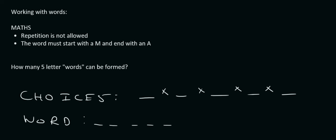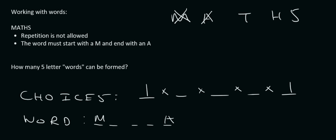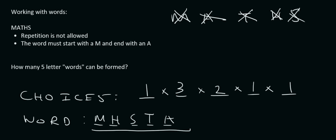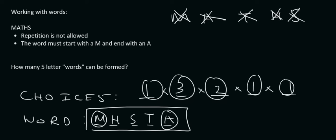Now a similar question, but repetition is not allowed. The word must still start with M and end with A. So M is fixed at the start — one way to choose that — and A is fixed at the end — also one way. That leaves three letters available for the middle positions: three options for the second spot, two for the third, one for the fourth. Multiplying everything together — one times three times two times one times one — gives us just six. So there are only six different words you could have made using that criteria.